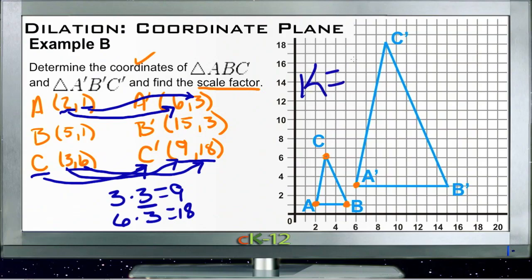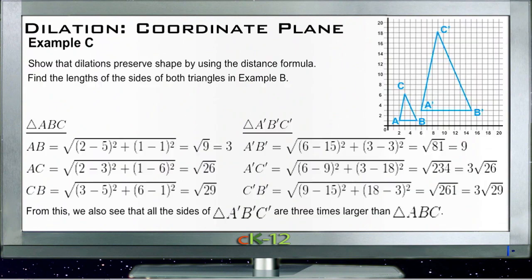All right, and then for Example C: show that dilations preserve shape by using the distance formula. Find the lengths of the sides of both triangles in Example B. So here are the triangles again from Example B; I just give us a really small version of that picture.